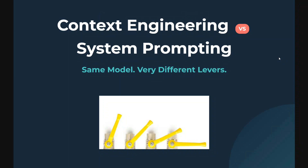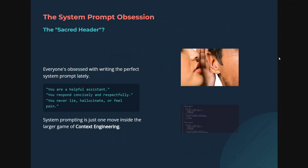No, it's not the same. You provide a system prompt beforehand so that the LLM is able to respond to any prompt in the given tone. A system prompt is a header — usually a single or multiple lines telling you about the role, like 'you are a helpful assistant,' 'you respond concisely and respectfully,' 'you never lie or hallucinate.' System prompting is just one move inside the larger game of context engineering. Hence, system prompting is a subset of context engineering.